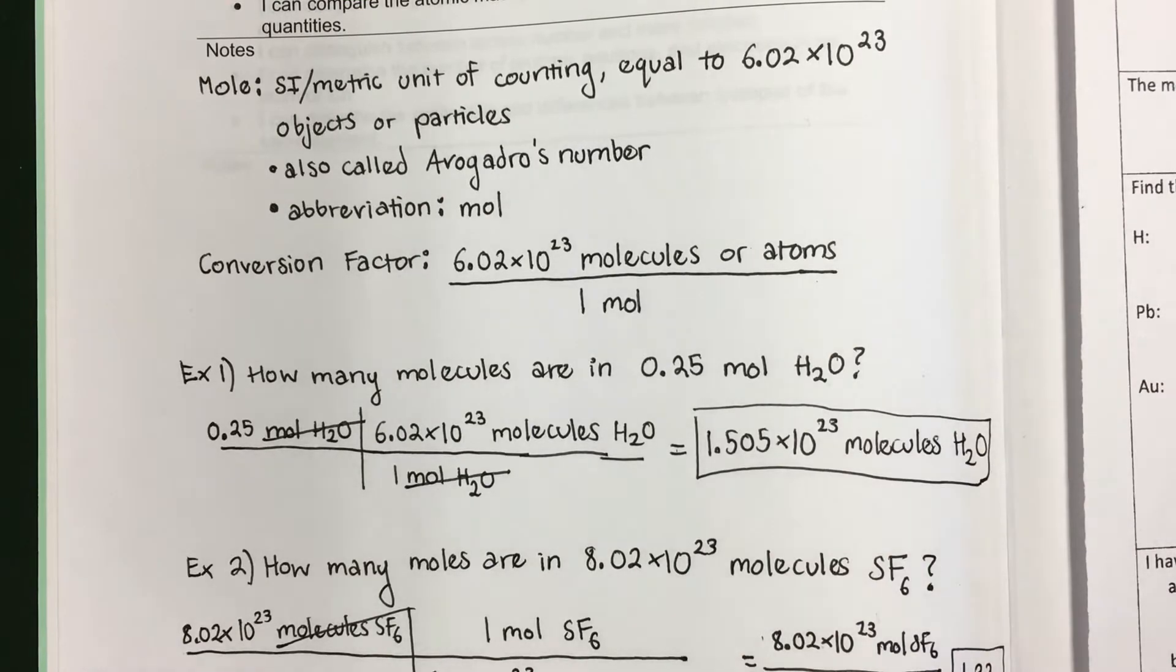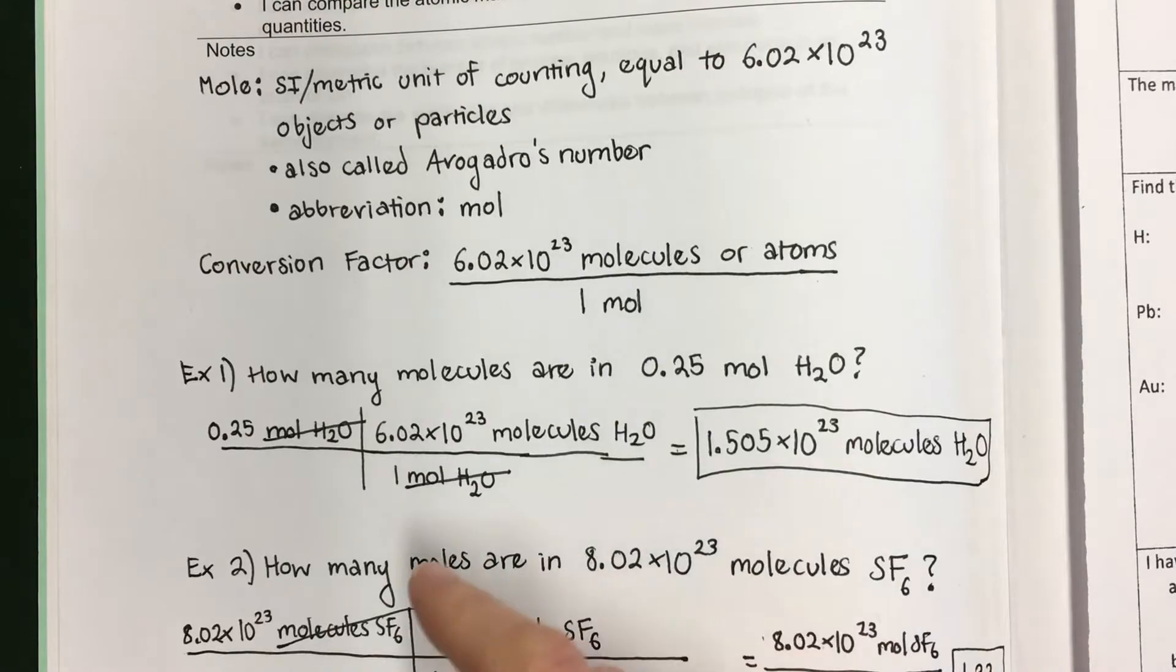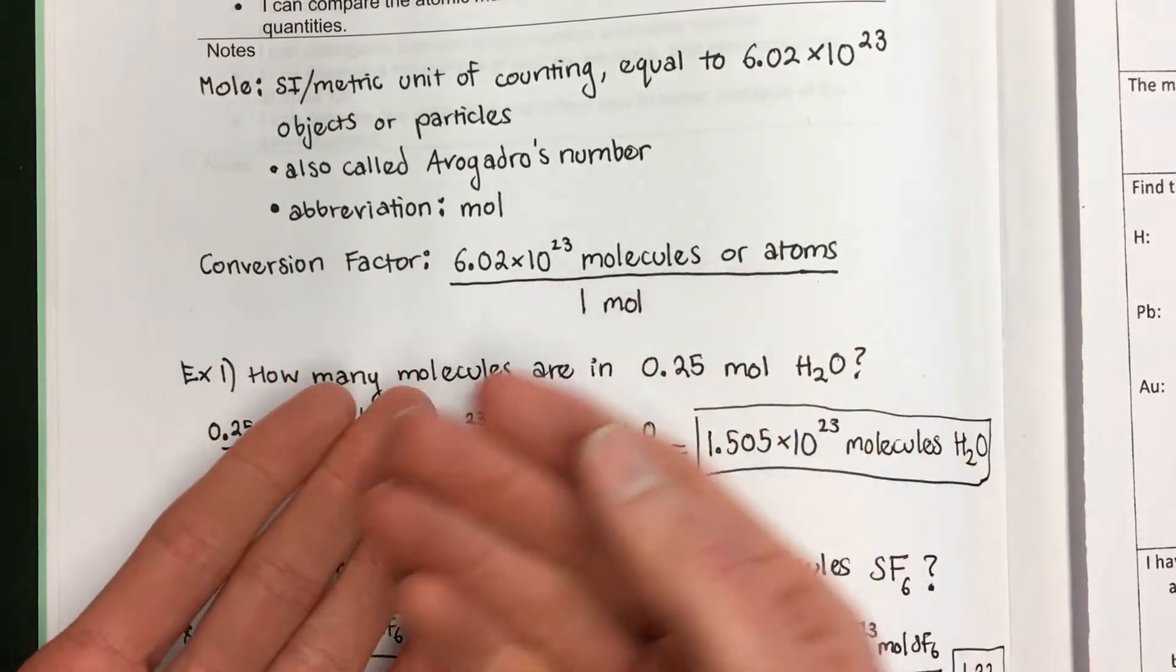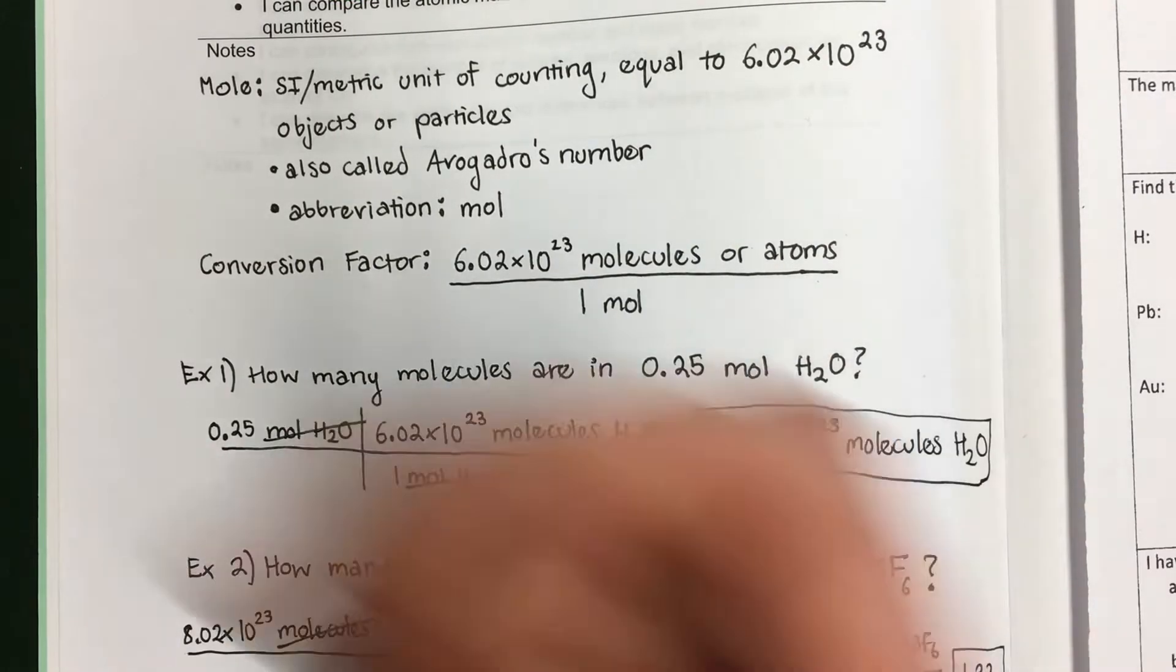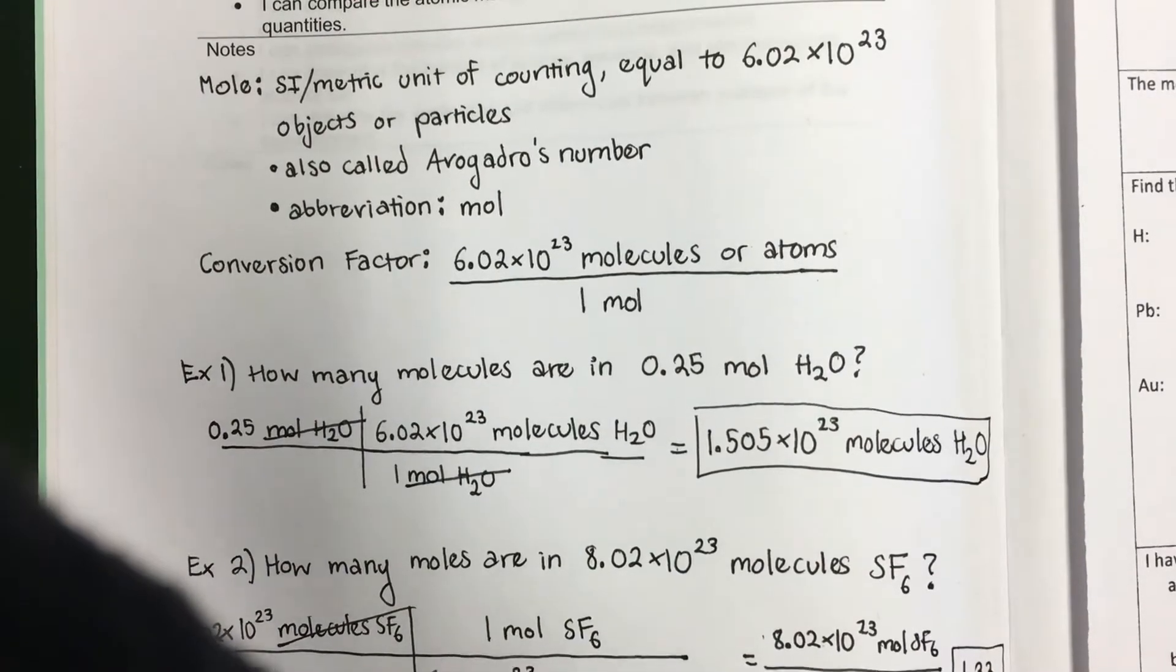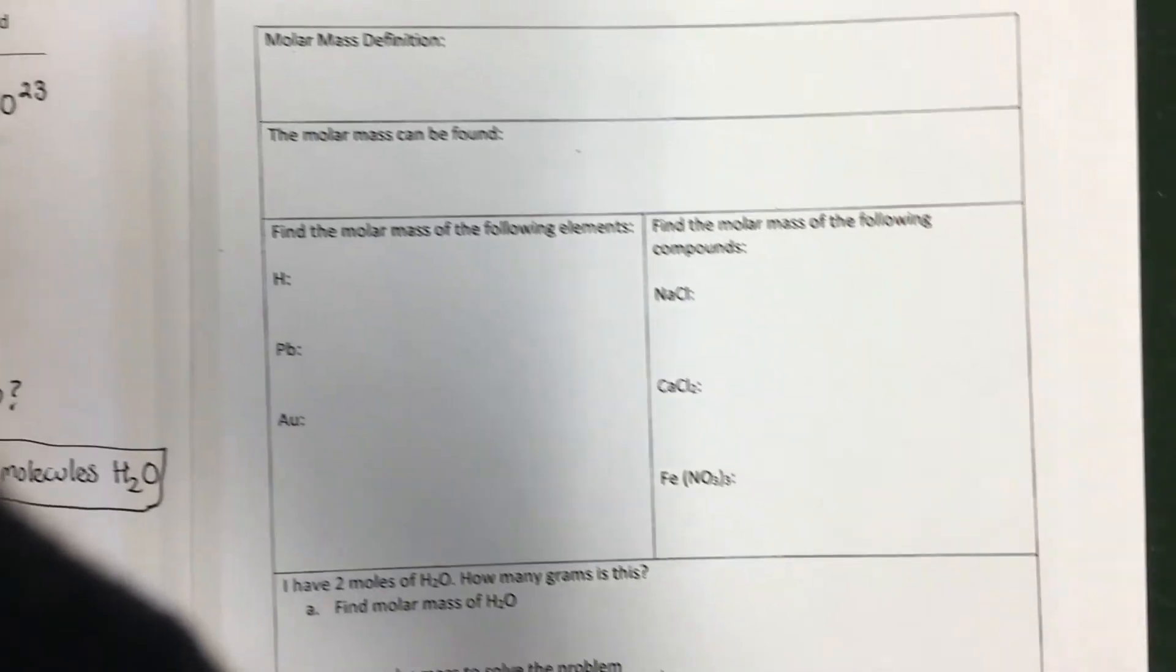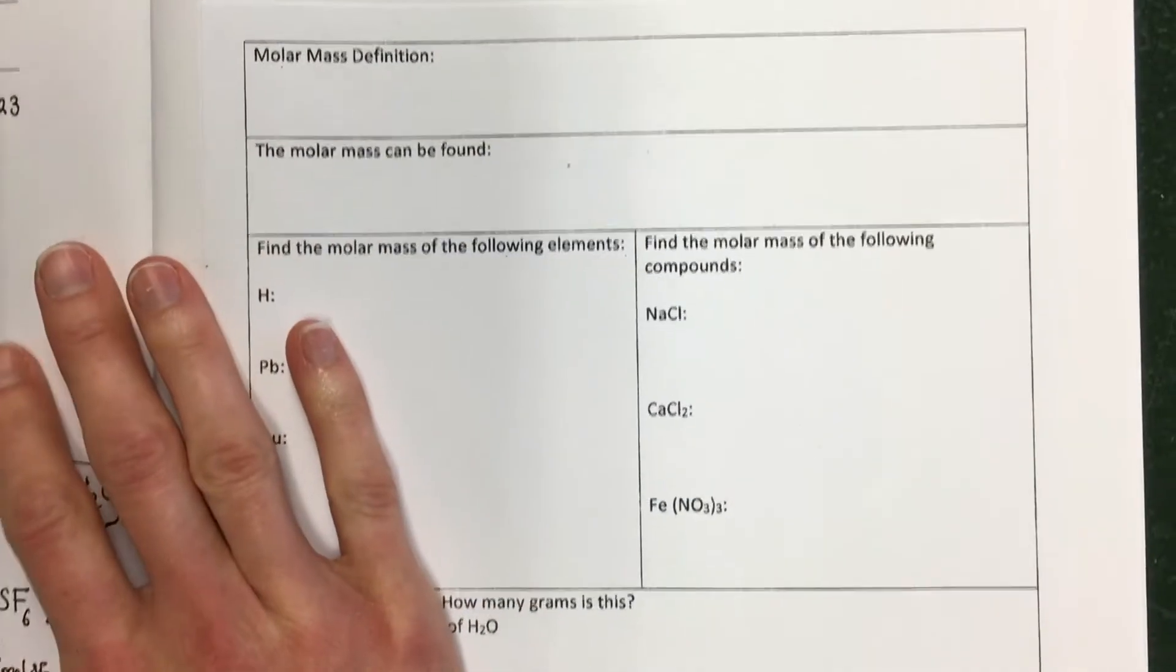We use moles a lot in chemistry to measure out amounts of chemicals when we do reactions. But you can probably imagine that it's impossible for us to actually count out that number of molecules. You can't just grab molecules with some tiny molecular tweezer and count them out. They're too small to just count. So we count them by weight using something called molar mass.